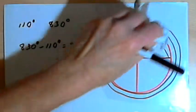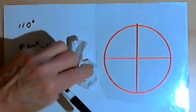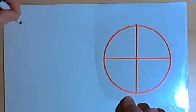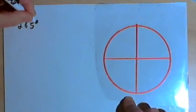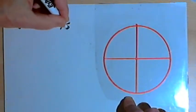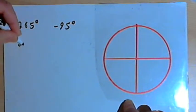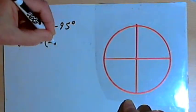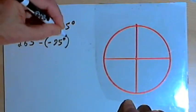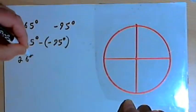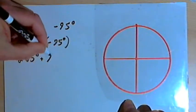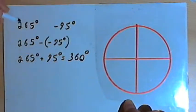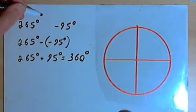This will also work with negative angles. Let's say we've got one positive and one negative. Maybe we have 265 degrees and negative 95 degrees. So I'll subtract one from the other. 265 degrees minus negative 95 degrees. That's the same as 265 degrees plus 95 degrees. We add those together, we get 360 degrees. So these two angles are coterminal.